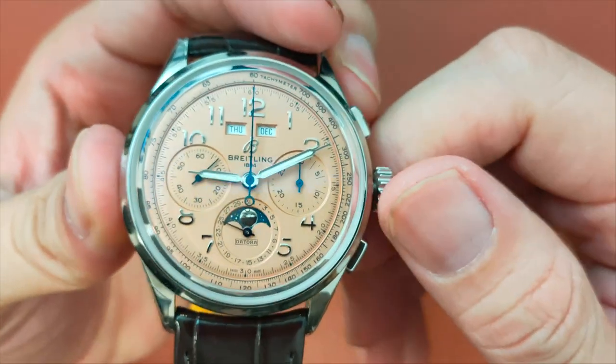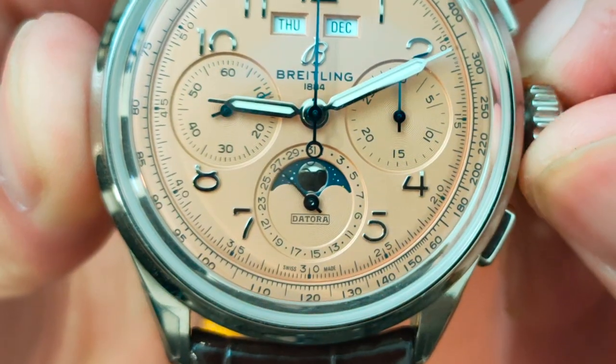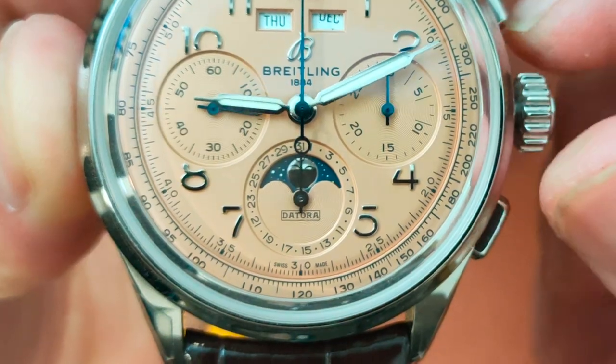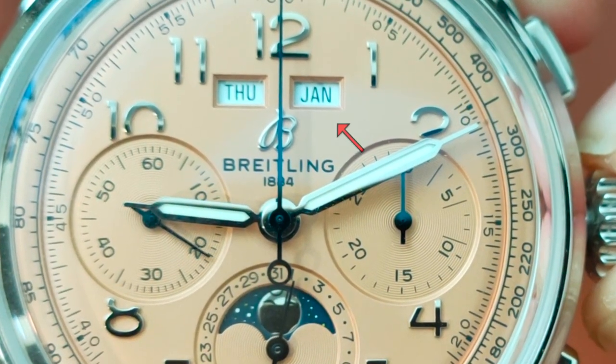The crown allows you to pull it to two positions. Position 1 allows you to instantaneously adjust the date when you rotate it anti-clockwise. With every full rotation on the date, this will then change the month. However, the month changes slowly with a snap with the date hitting the first.